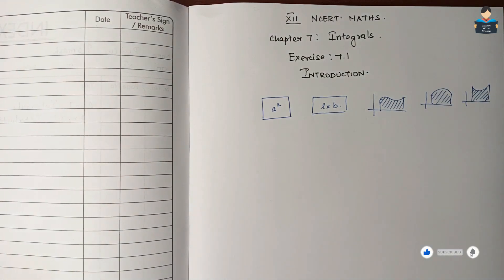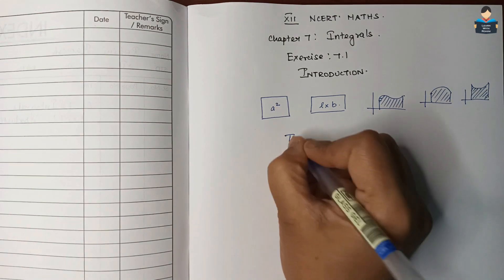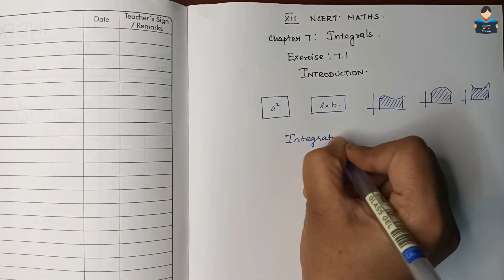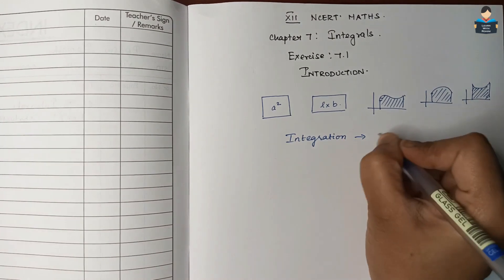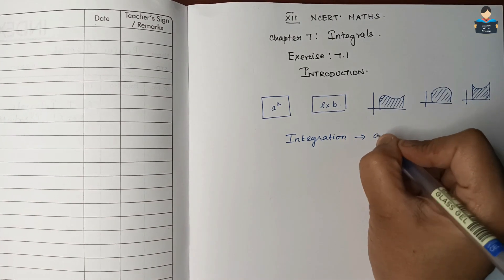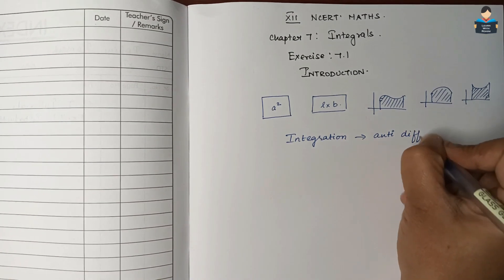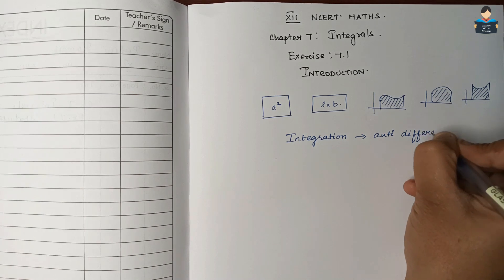Integration is also called anti-differentiation. So integration and anti-differentiation — we will use these two terms interchangeably.